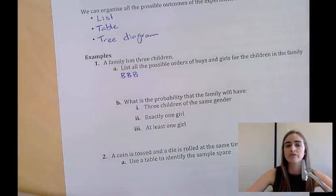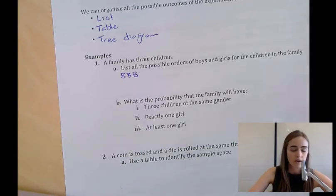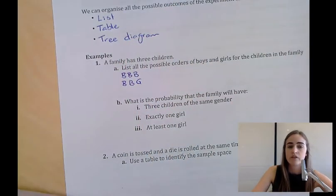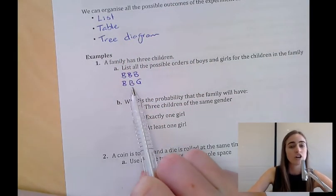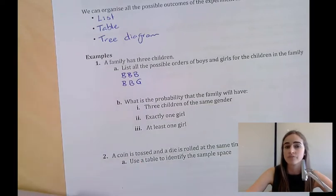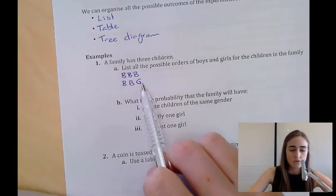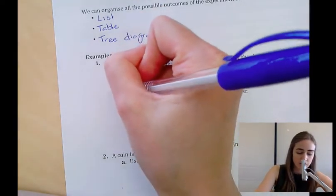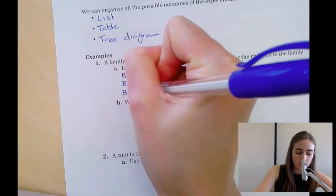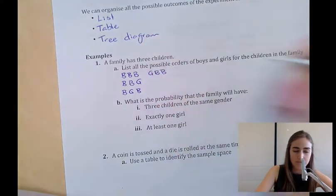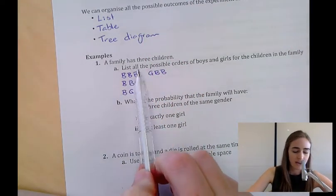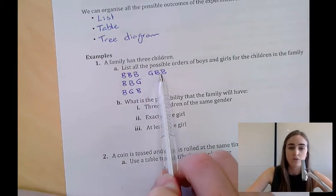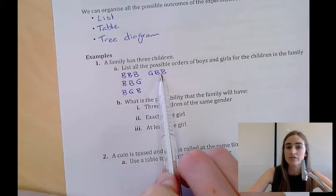What if we've got a girl? We might have boy, boy, girl. That's first child's a boy, second child's a boy, third child is a girl. What if it's still two boys and a girl, but the girl's the first or second child instead? We'd have boy, girl, boy, or girl, boy, boy. These three are our options when we have one girl and two boys.